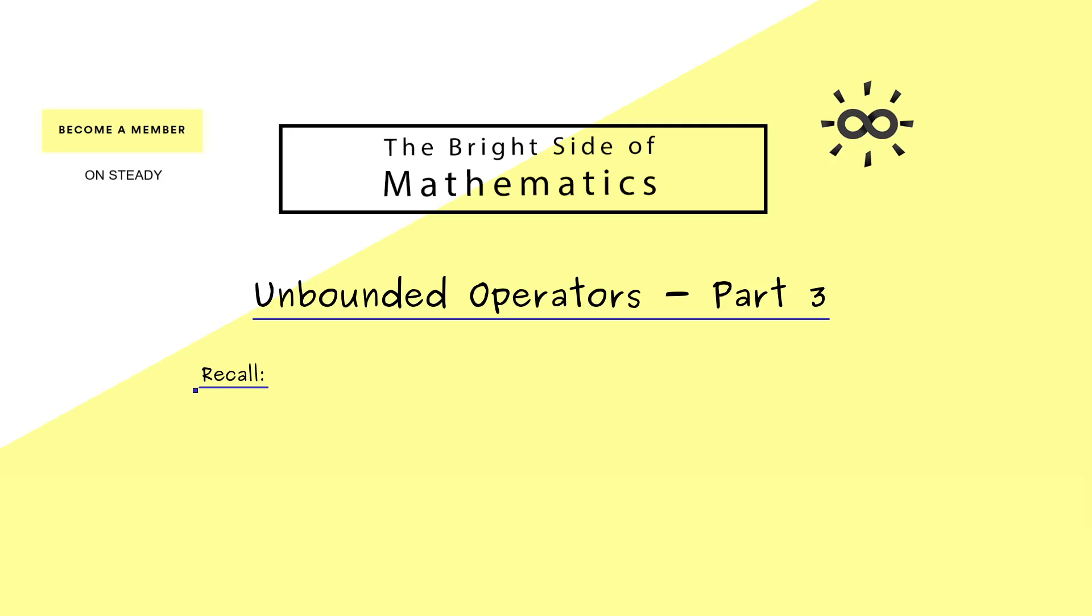Let's start by telling what we mean by an operator. An operator T is just a linear map between two normed spaces X and Y, but we can have a domain, usually called D(T). In general, T is not defined on the whole normed space X, but it still has to be a linear mapping between the two spaces.